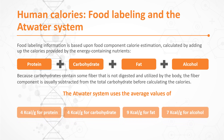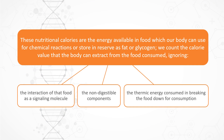These nutritional calories are the energy available in food that our body can use for chemical reactions or store as fat and glycogen. We count the calorie value the body can extract from food consumed, but we ignore the interaction of food as a signaling molecule, non-digestible components, and the thermic energy consumed in breaking down food. Nearly 30% of the energy you use to break down a steak is consumed in digesting that steak. So even though you'd think you're getting 750 calories, 250 of those calories went just to utilize it — the net calorie is only about 500.